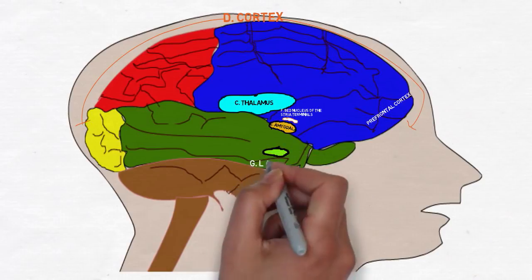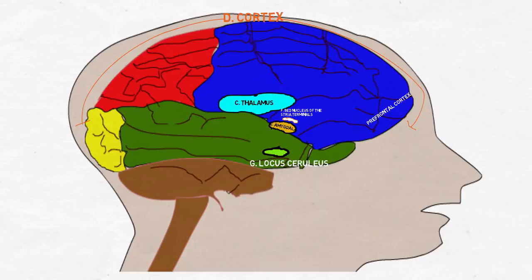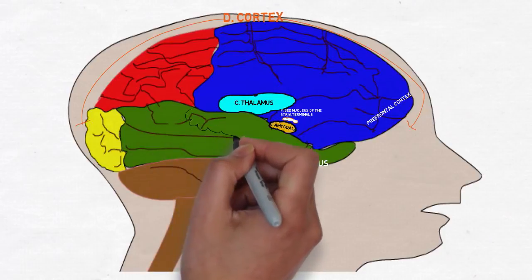The locus ceruleus receives signals from the amygdala and initiates the classic anxiety response: rapid heartbeat, increased blood pressure, sweating, and pupil dilation.